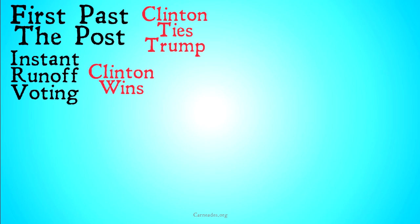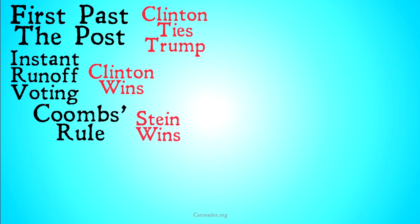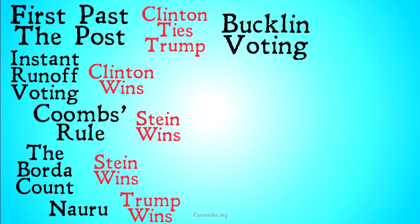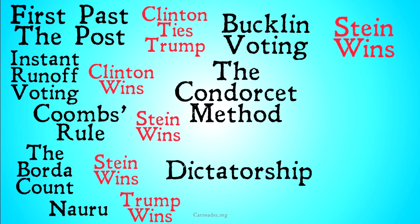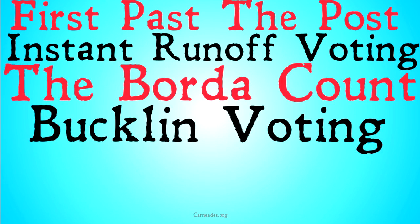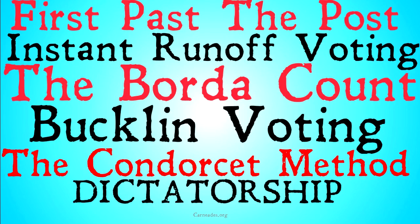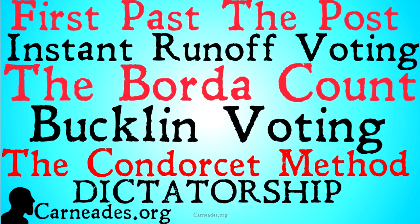So first past the post said Clinton ties with Trump, instant runoff voting said Clinton wins, Coombs rule said Stein wins, Borda count said Stein wins, Nauru said Trump wins, and Buckland voting now says that Stein wins. We still have one more candidate that hasn't won and two more methods to try out. Up next is going to be the Condorcet method, and then dictatorship. Watch this video and more at carneades.org, and stay skeptical, everybody.